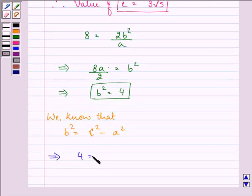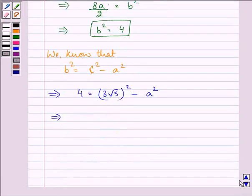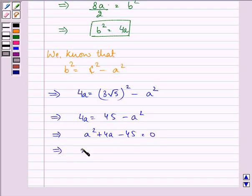So we have 4a equals c square, which is 3 root 5 the whole square, minus a square. This gives us 4a equals 45 minus a square, which is a square plus 4a minus 45 equals 0. On splitting the middle term we have a minus 5 and a plus 9 equals 0.